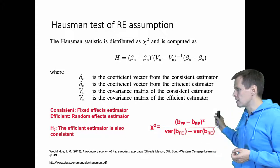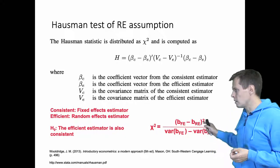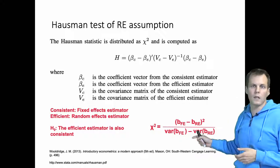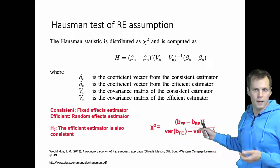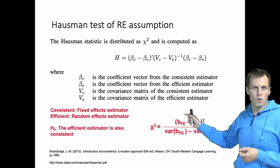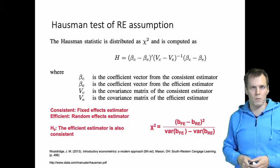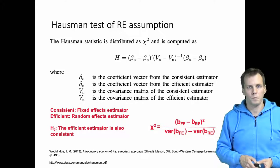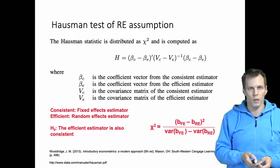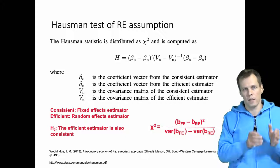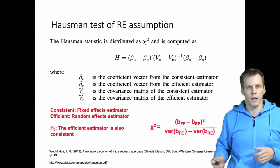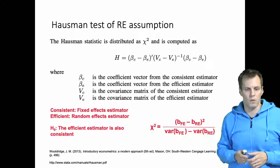In large samples, both terms get small if both estimators are consistent. This equation follows the chi-squared distribution with one degree of freedom, and your statistical software will give you the test statistic value and the p-value based on the chi-squared distribution.